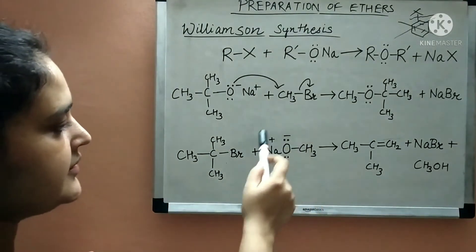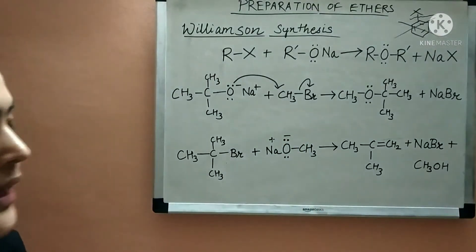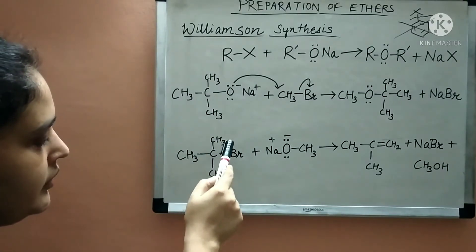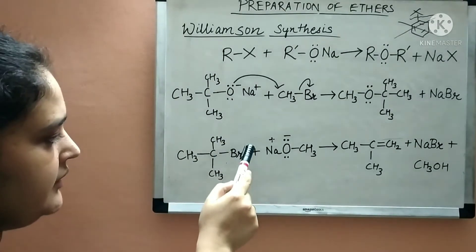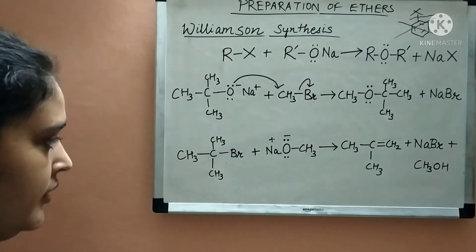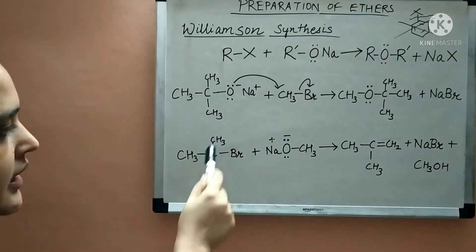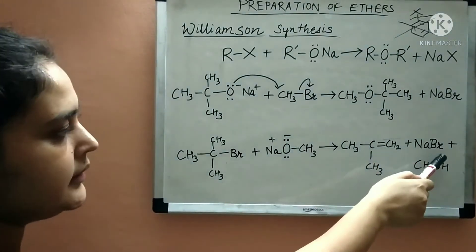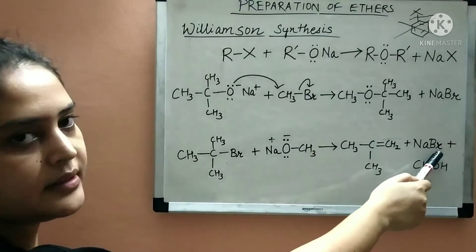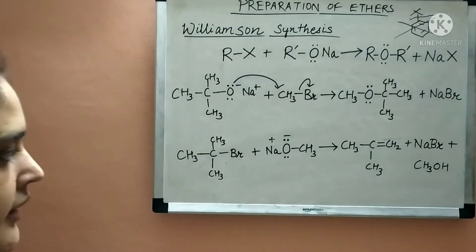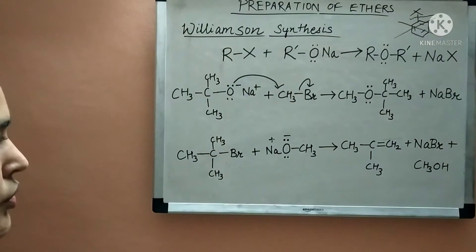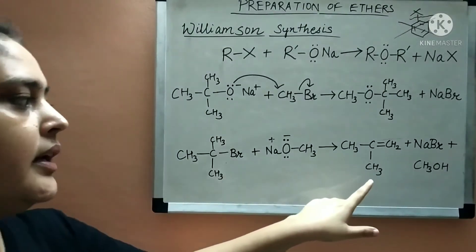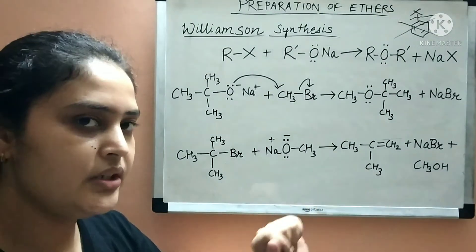Instead, the sodium alkoxide will act as a base and abstract a hydrogen atom from the tertiary alkyl halide. The hydrogen atom and the bromine will leave, resulting in the formation of a carbon-carbon double bond — an alkene. Sodium bromide and methanol are left as byproducts. Therefore, if a tertiary alkyl halide is used, it will form an alkene through an elimination reaction.